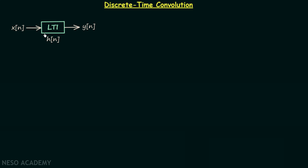We have a discrete time LTI system where the input is x[n], the impulse response is h[n], and the output is y[n]. We can calculate the output y[n] by simply convolving the discrete time input signal x[n] with the impulse response h[n], which is also a discrete time signal.